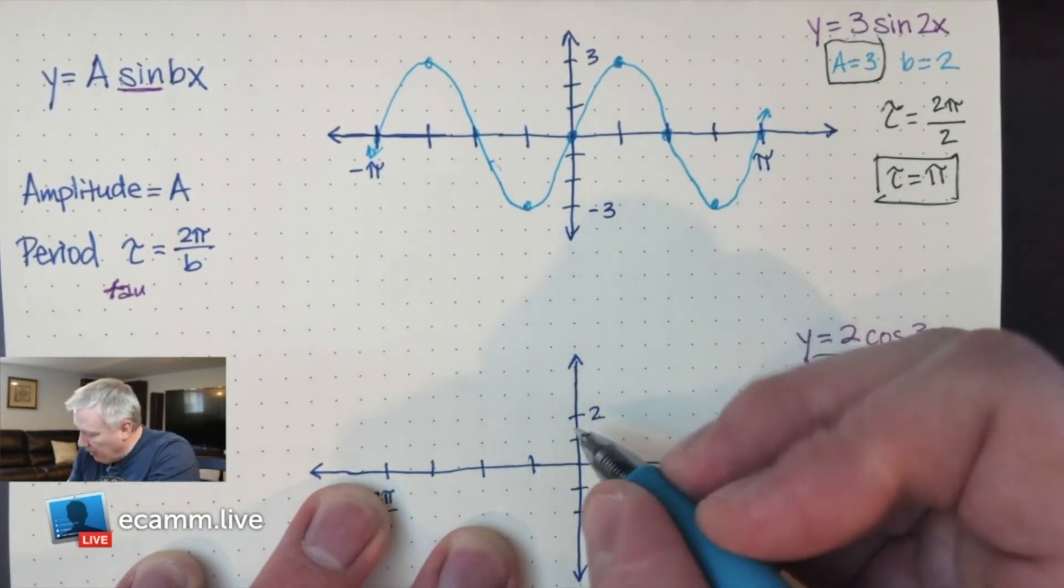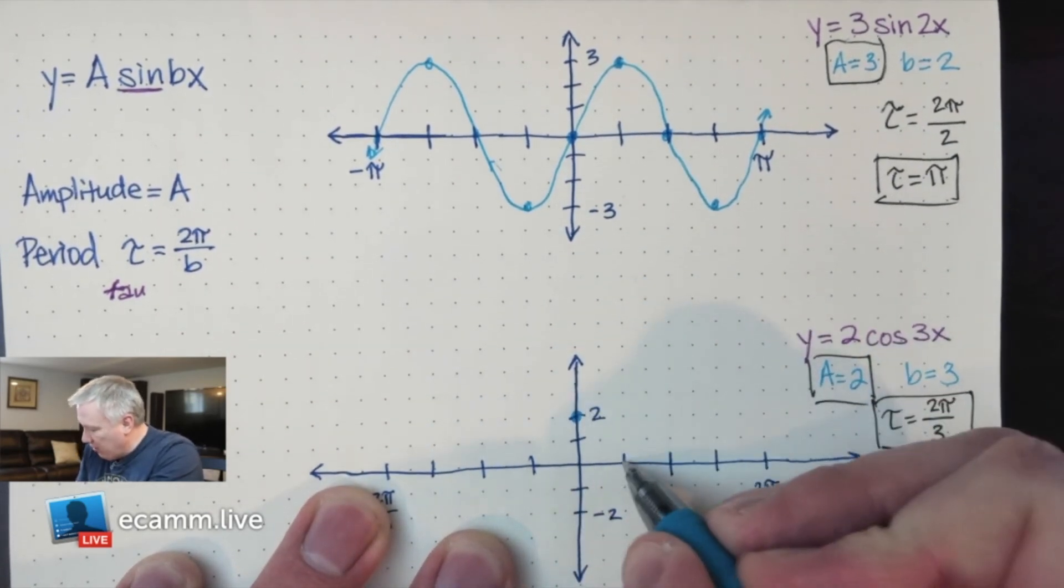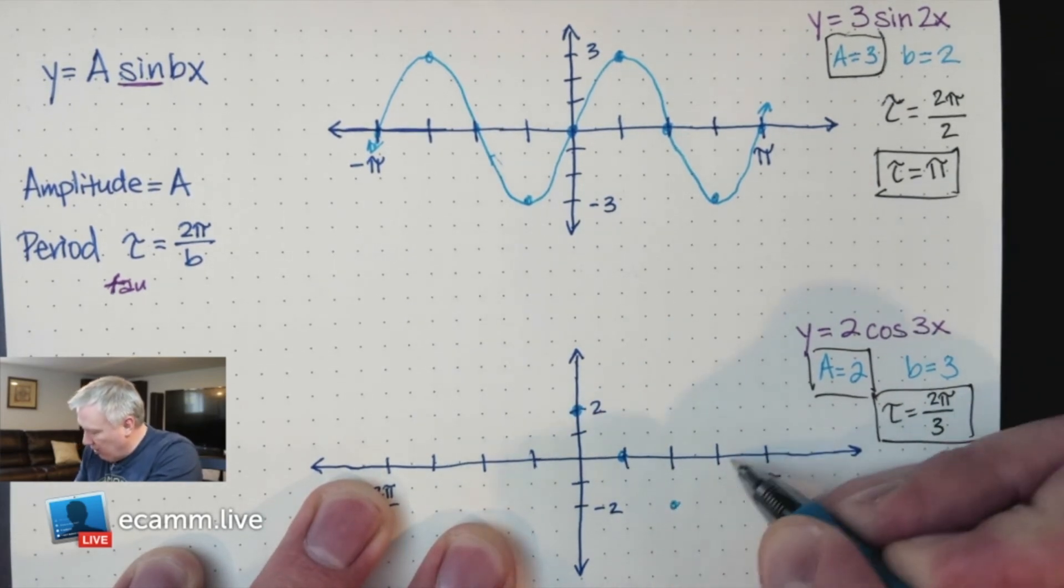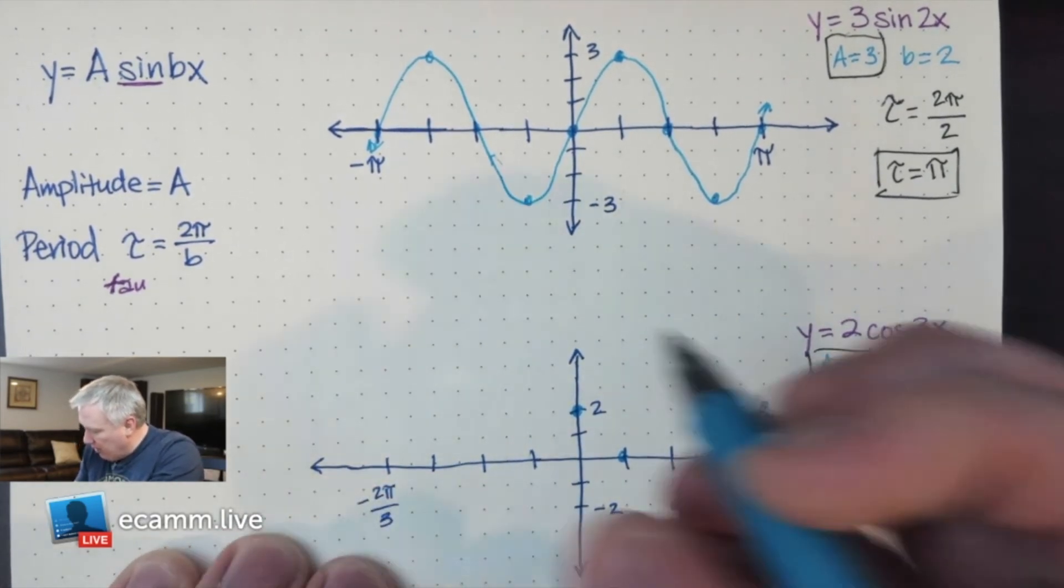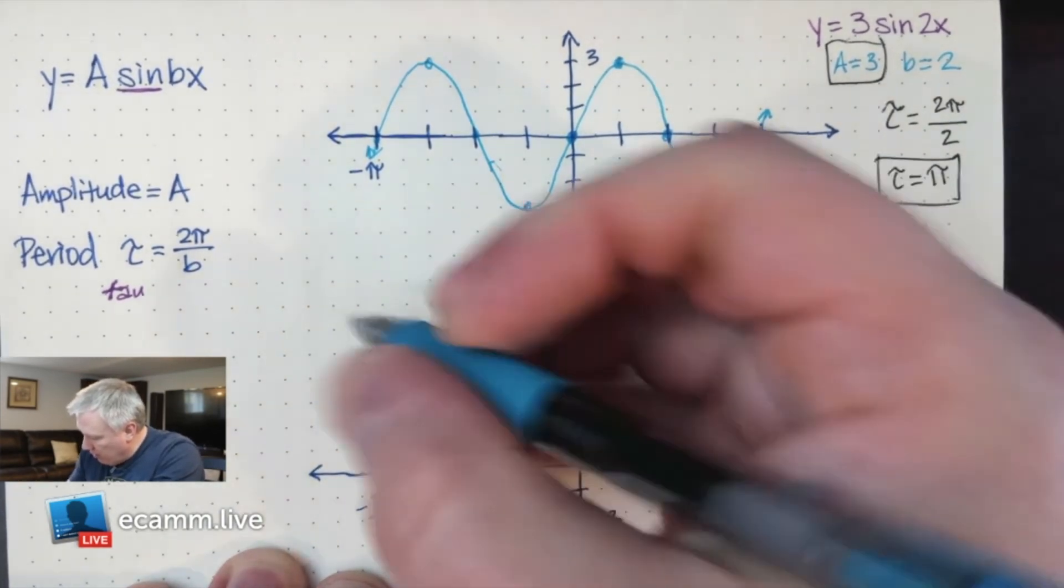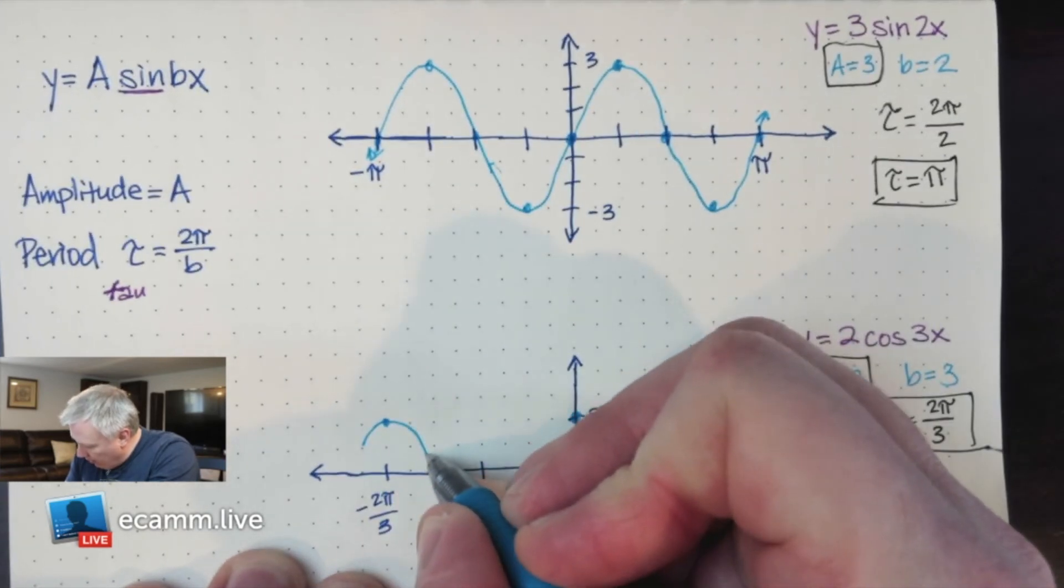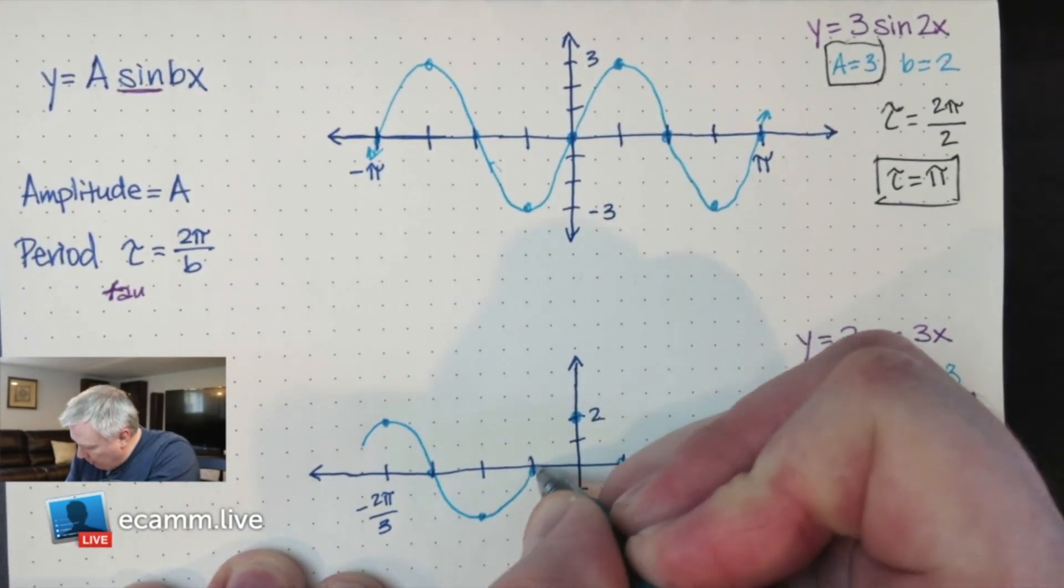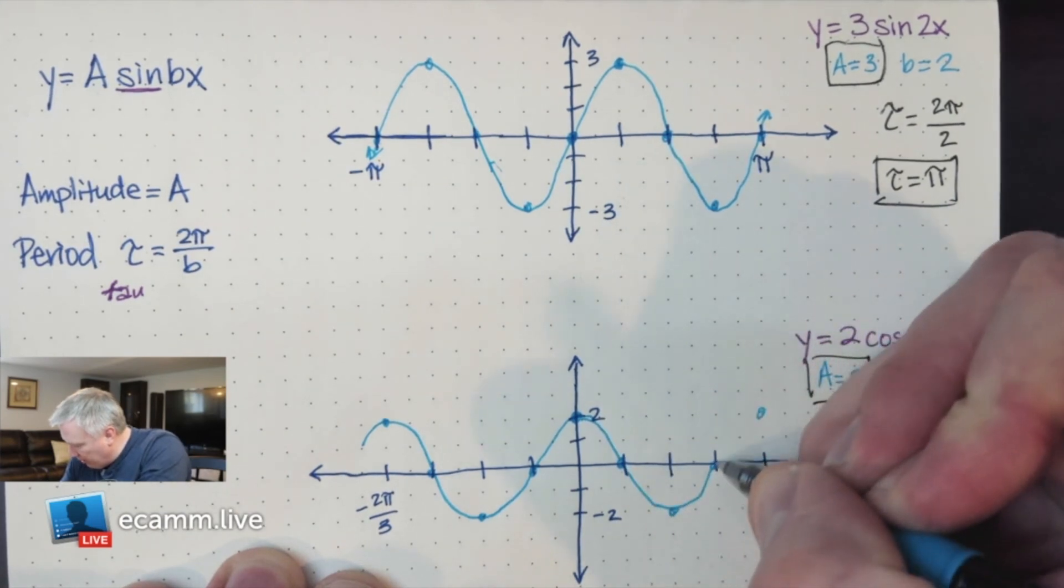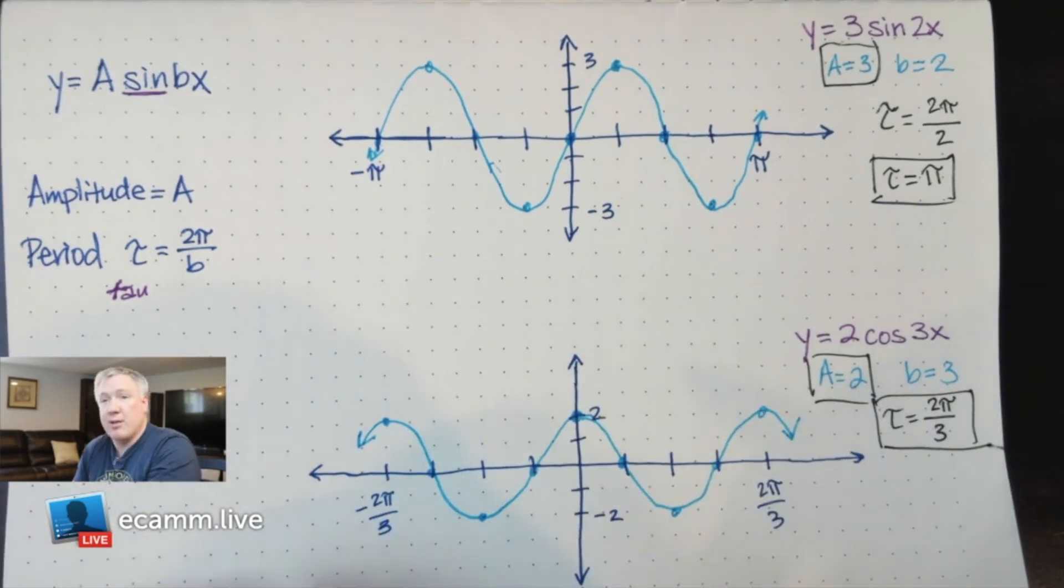Cosine starts at its peak, which is 2, so I'm not starting in the middle. I'm starting at the peak, and then it goes to the middle. Now I need to go down and then back up, then to the top. This pattern, once you get it, is pretty simple, but it might take you a little bit of time to wrap your head around it, and that's okay. These are two key patterns, sine and cosine, very similar, just about where they start and where they go next.